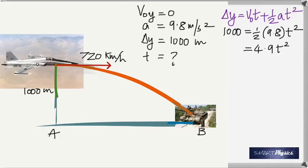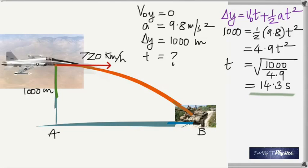So you have 4.9t squared. When you rearrange, you get t equals square root of 1000 divided by 4.9. On calculating this, you get 14.3 seconds.